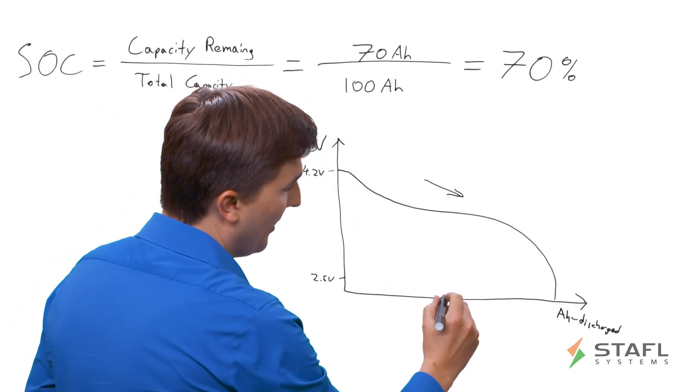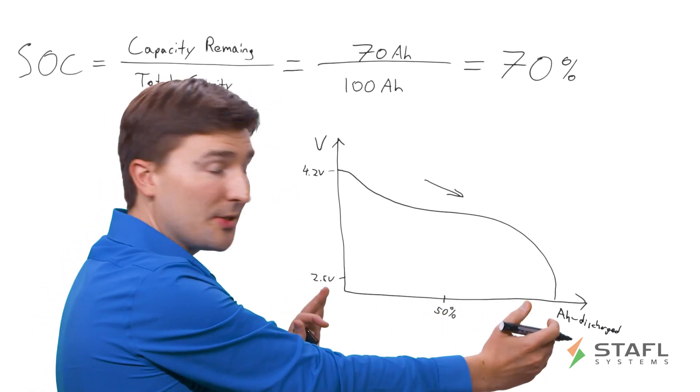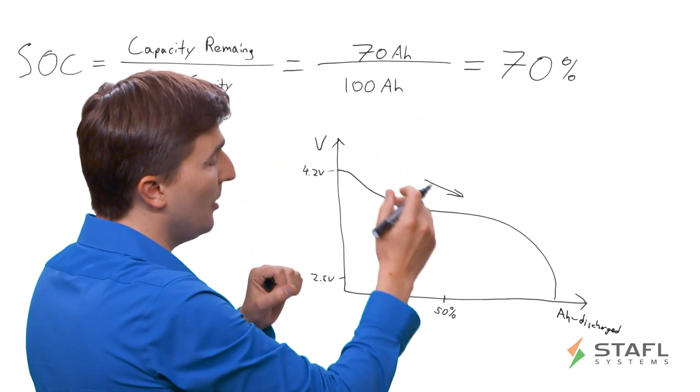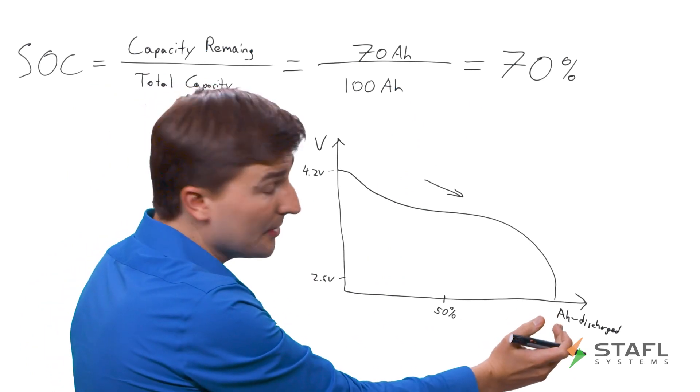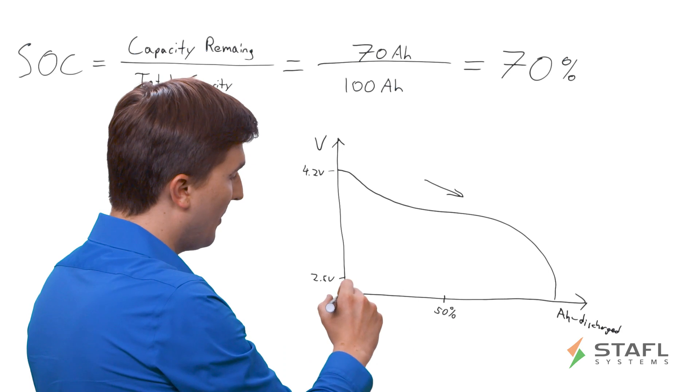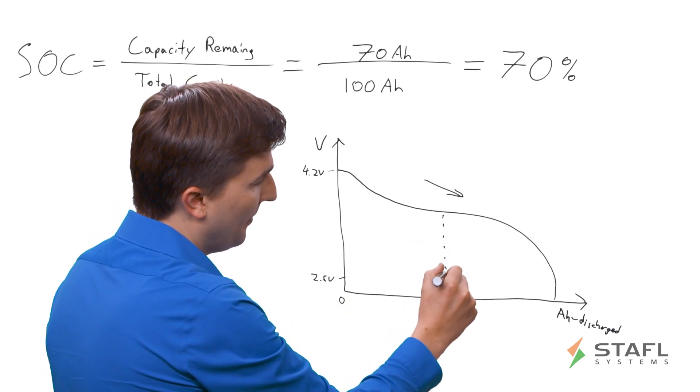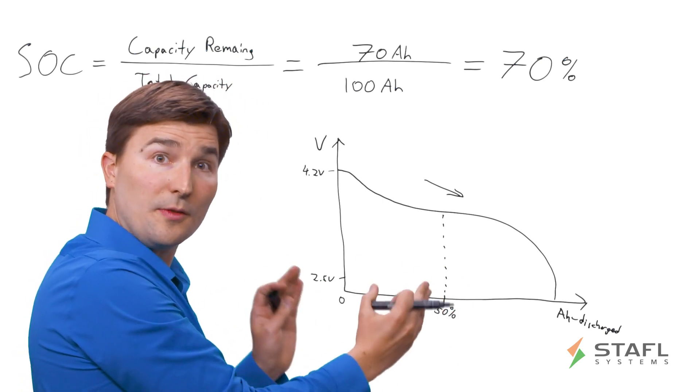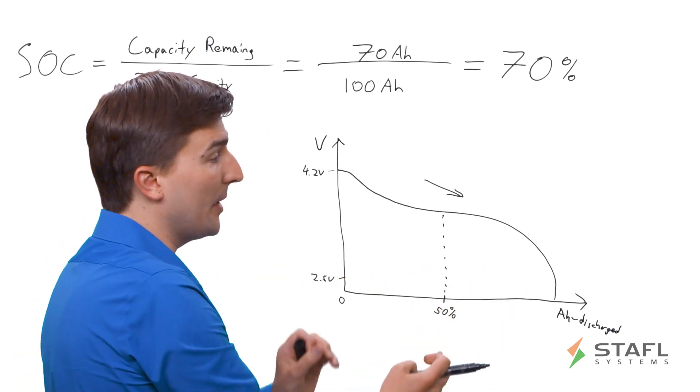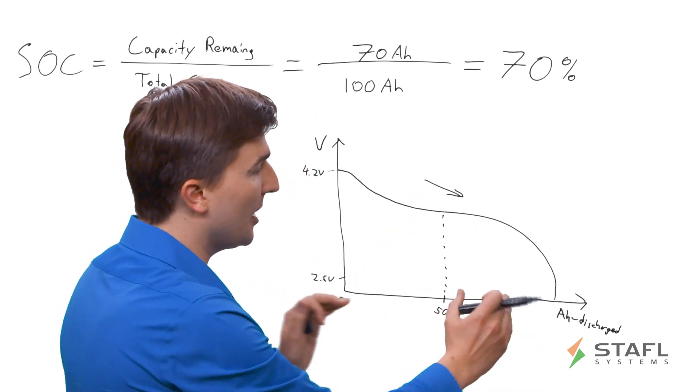For example, if I took the 50% point for the amp hours discharged. If we took the example above and said that this was 100 amp hours, or 100%, and this was 50 amp hours, this is zero, then this would be the 50% state of charge point. Which means that we've discharged 50 amp hours out of 100 amp hours, and we have 50 amp hours left to go before the battery reaches its termination voltage.